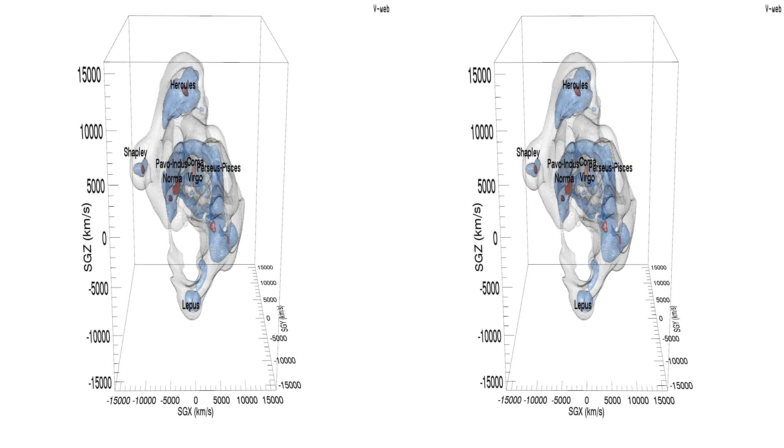Here we see contours of the cosmic web as defined by the velocity web. Local eigenvalues of the shear tensor are evaluated, giving the red, blue and white contours enclosing knots, filaments and sheets.